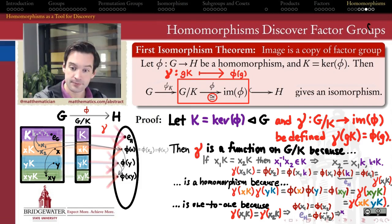But that means that X1 inverse X2 belongs to the kernel of phi, because phi is sending it to the identity. And if X1 inverse X2 belongs to the kernel of phi, K, that means that X1K and X2K are the same coset, again, using the equivalence relation that defines left cosets. And so what we've just proven is that if gamma sends X1K and X2K to the same spot, that must mean that X1K and X2K were the same elements of G mod K. So gamma is a one-to-one function.